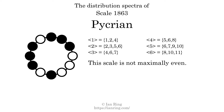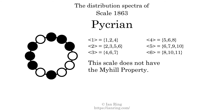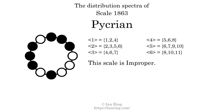If every spectrum has exactly two specific intervals, we call that the Myhill property. This scale does not have the Myhill property. Since the generic interval ranges overlap, this scale is an improper scale.